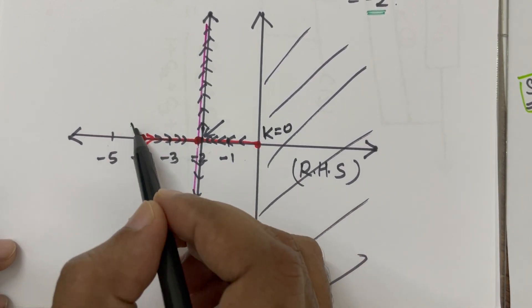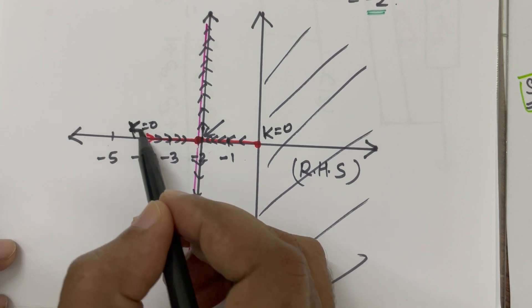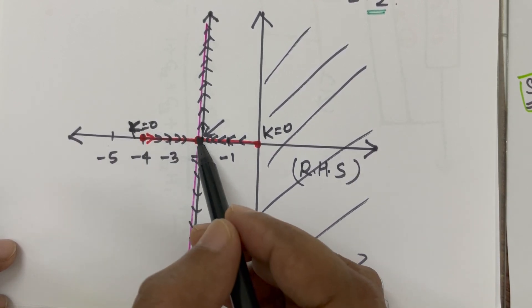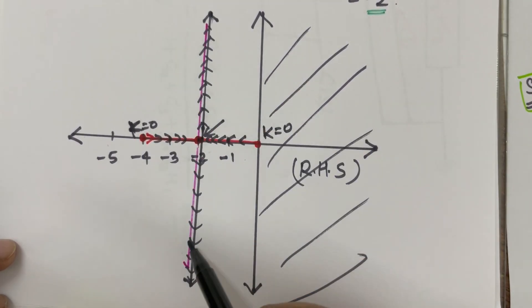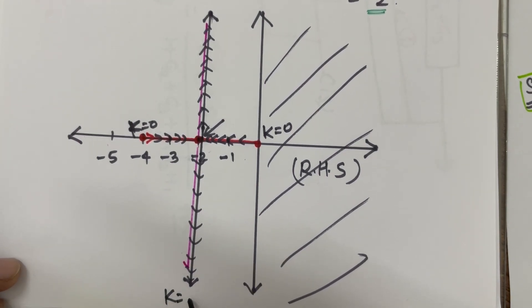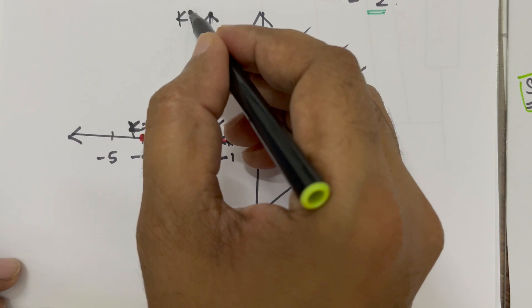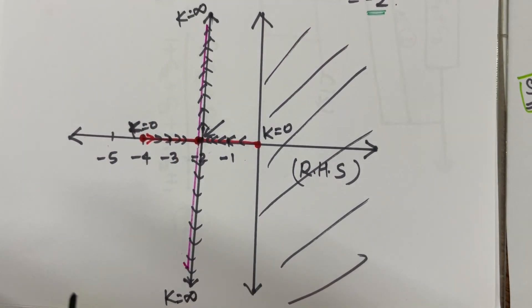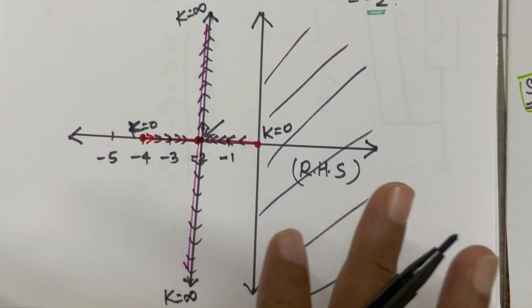So, here K was 0, K was 0, it has started from K equal to 0. And from here, it has started moving upward and downward. And it is reaching K equal to infinity. And this is K equal to infinity. So, we have drawn the root locus.